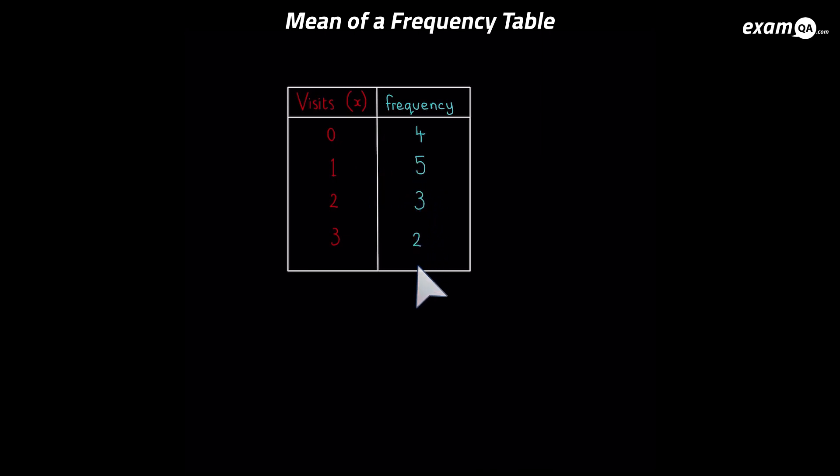So you could just list them out and do it the same way we did the first example. But we don't want to do that. There's a much easier way to do it if it's in a frequency table. First thing, we need to make another column. So in this column, we're going to do f times x, the frequency times the values.